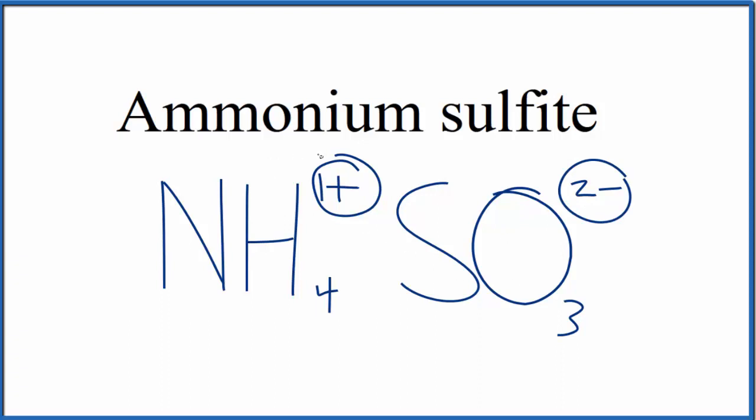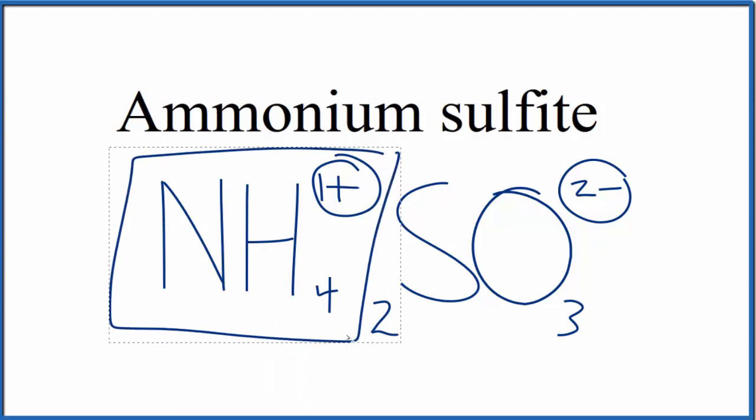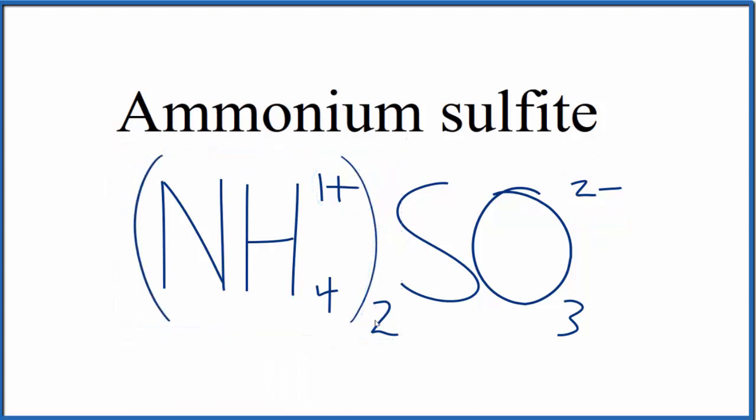The way to do that is if we had two of these ammonium ions. So we could put a 2 here, replace this with parentheses. And now we have 2 times 1+, that's 2+, that'll balance the charge on the 2-.